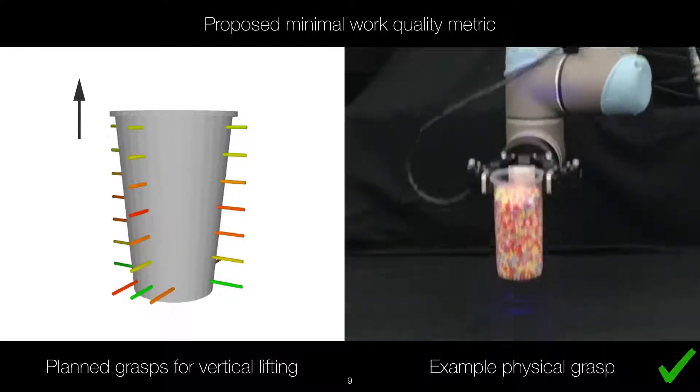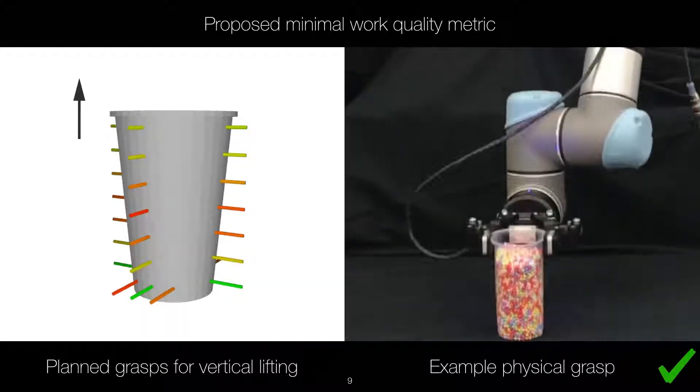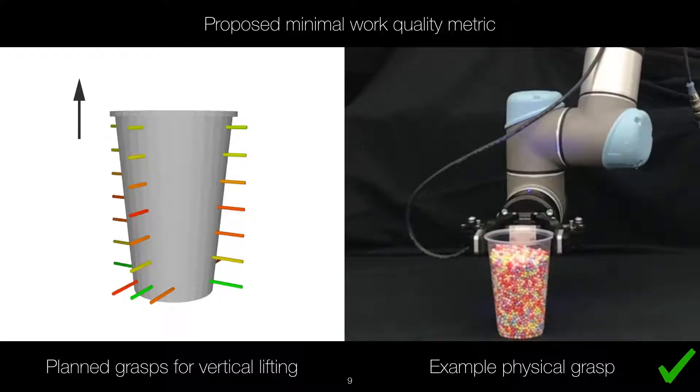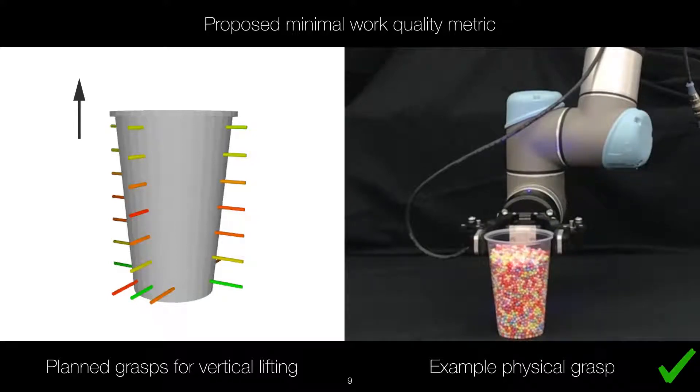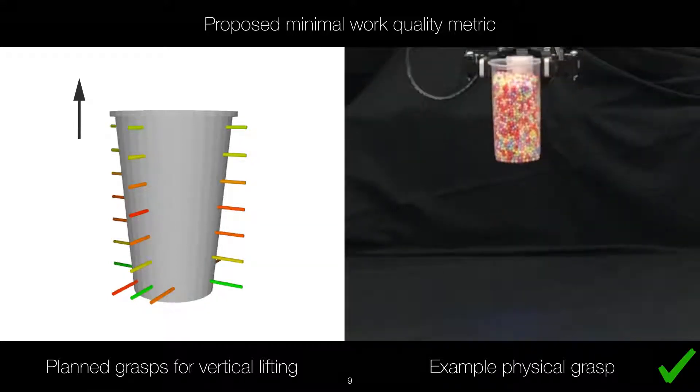Here we show the planned grasps with the proposed minimum work metric, where the green axes indicate low work required for the lifting task. On the right we show an example physical grasp, which succeeded.